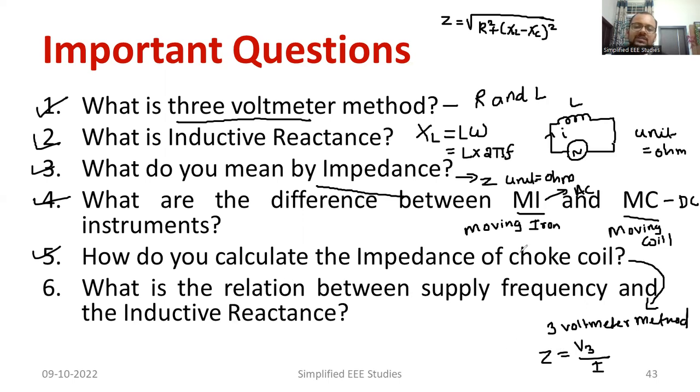Then, suppose if it is an RL circuit, how to calculate impedance? For RL circuit, impedance can be calculated by using the formula square root of R square plus XL square. This is a general formula. But regarding three voltmeter method, you can use the given formula, that is Z is equal to V3 upon I.